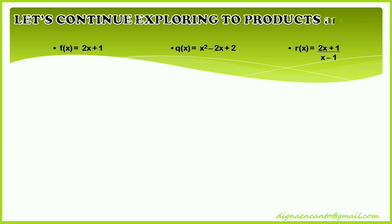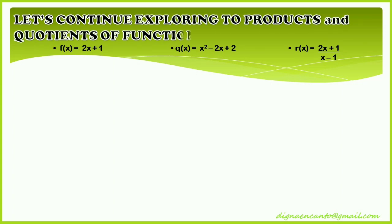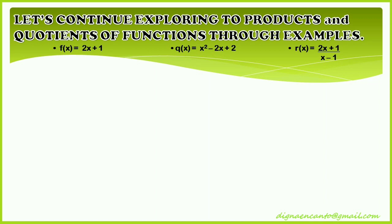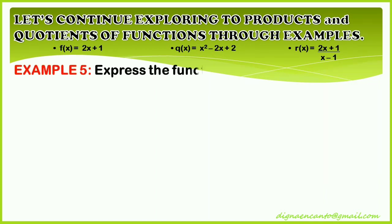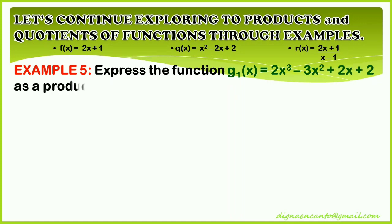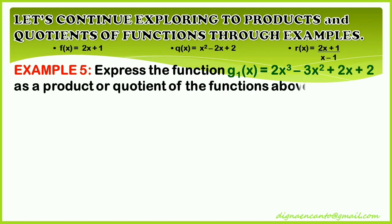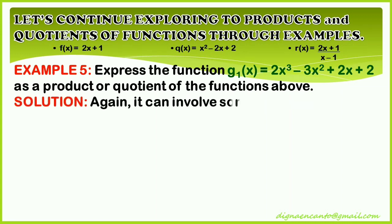Let's continue exploring products and quotients of functions through examples. Example 5: express the function g sub 1 of x equals 2x cubed minus 3x squared plus 2x plus 2 as a product or quotient of the functions above.